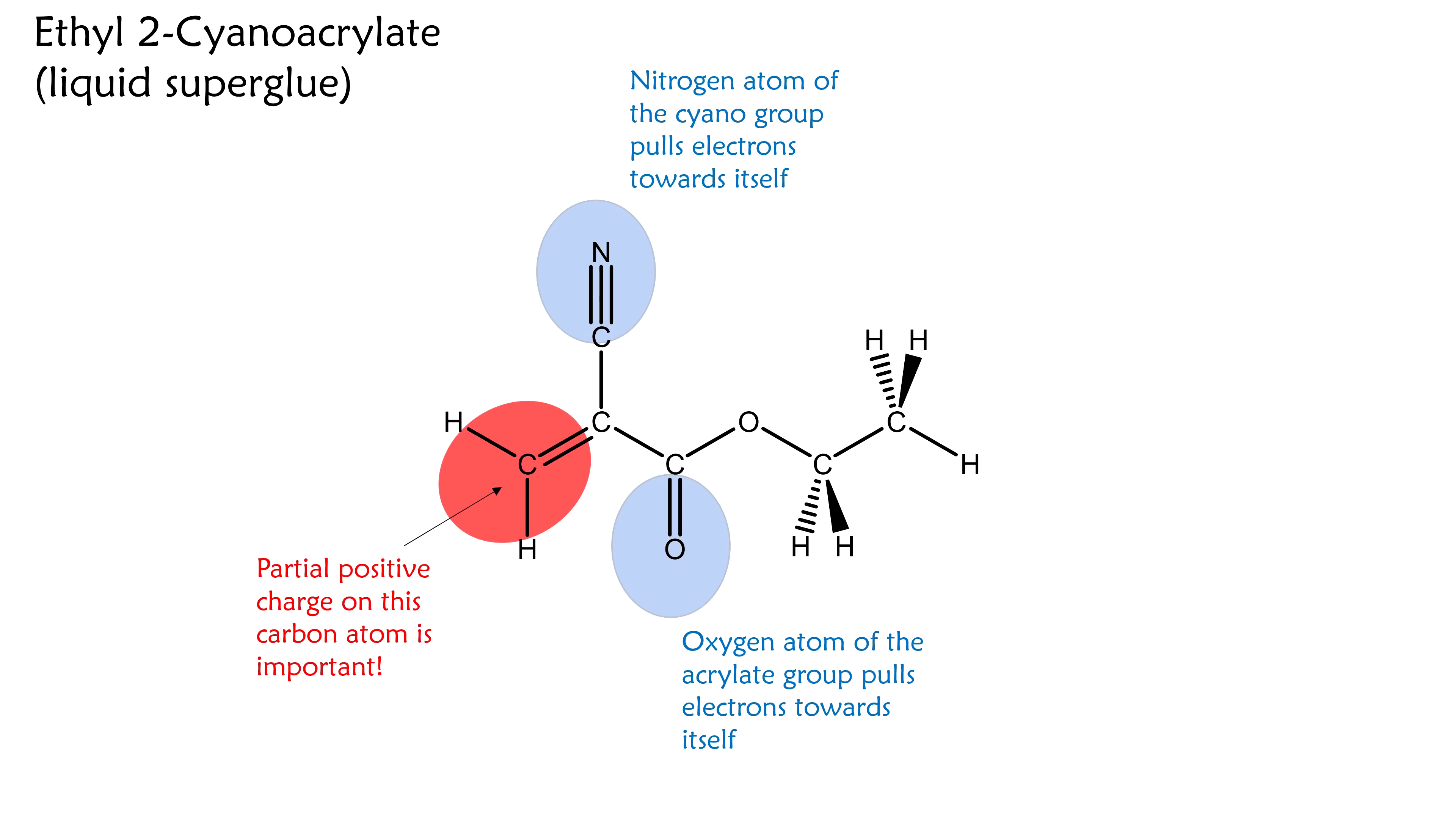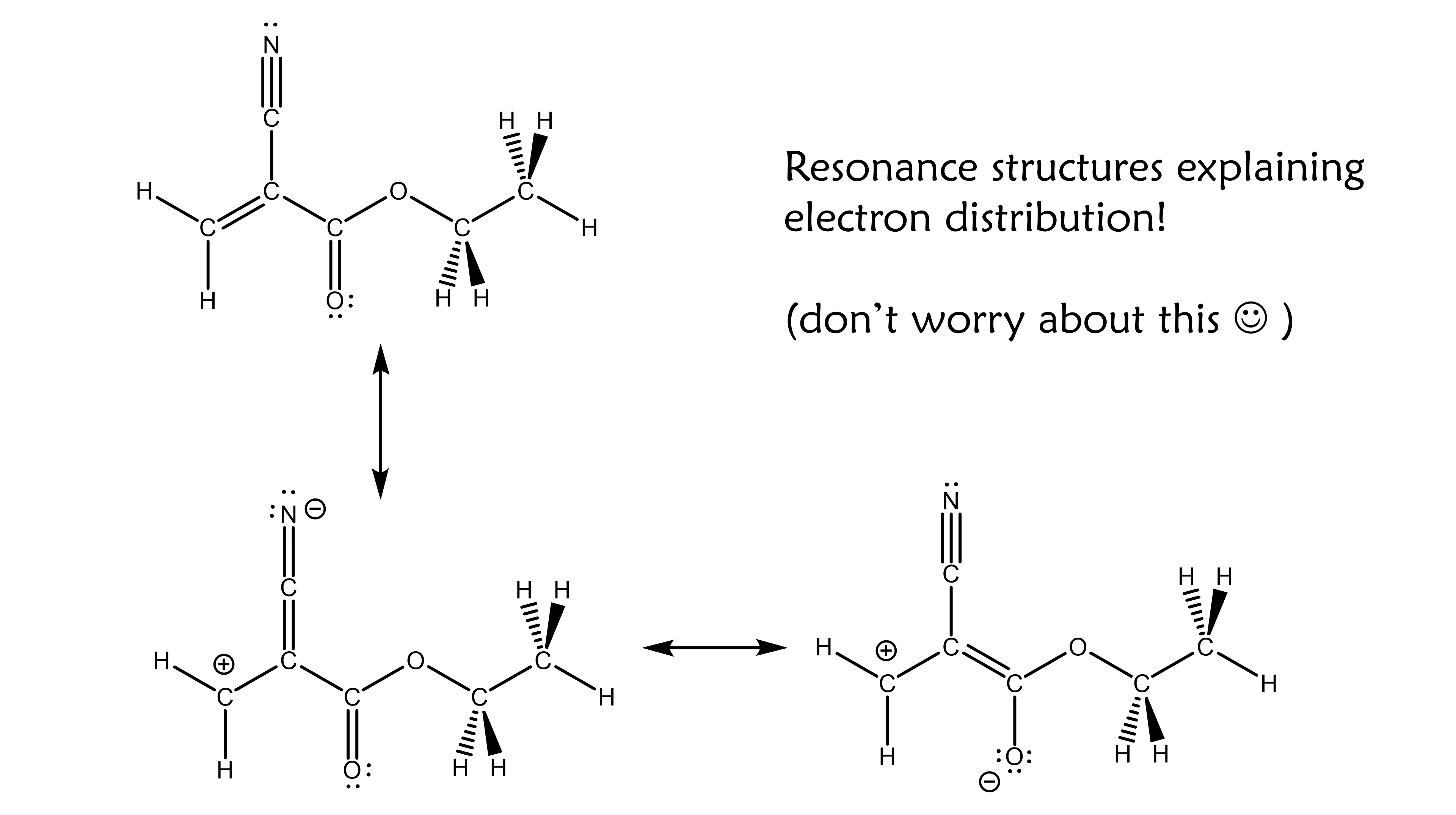The partial positive charge on this carbon atom is particularly important for the reaction that is about to happen. This electron distribution can be explained using the theory of resonance as well, but that's a whole other can of worms.